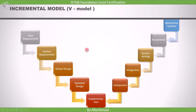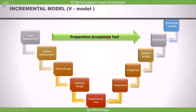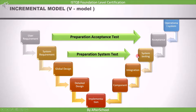The advantage of the V-model over the sequential model is that all testing activities run parallel to the development activities. Once you have the user requirements, even before completing the steps below, you can start preparing test activities for acceptance testing. Similarly, when you're in the system requirement stage you can start preparing for system testing, and once the software comes you can execute those test cases. The process happens in parallel — when development activities start, testing activities can also start at the same time.